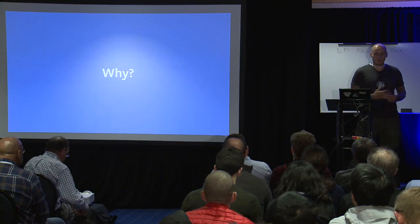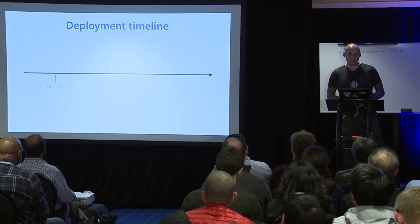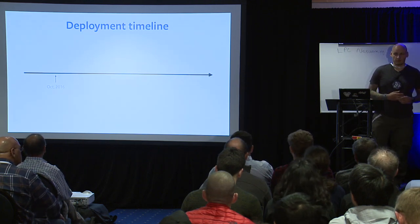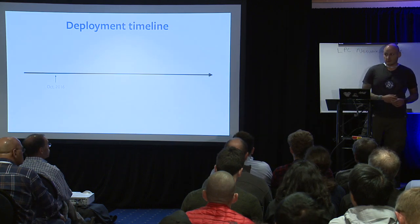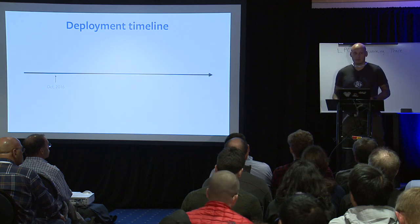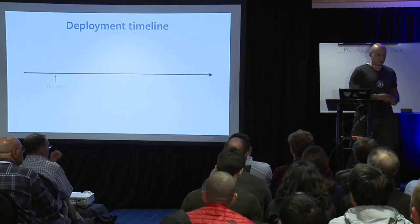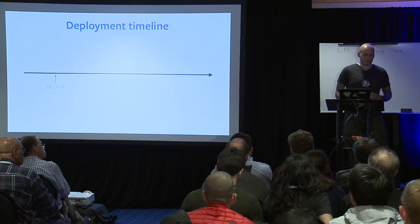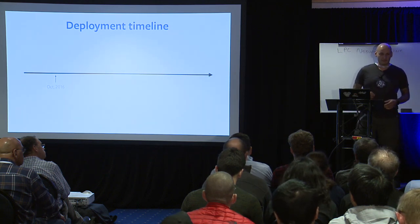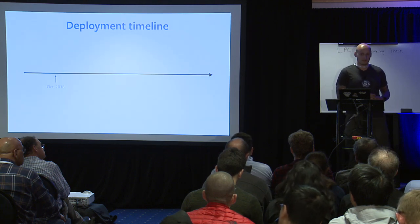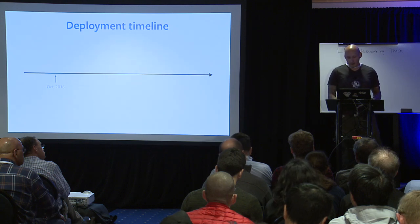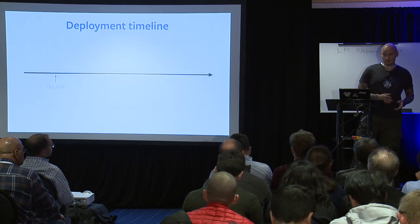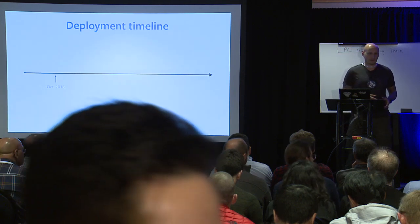Why did we decide to build something on top of XDP? Everything started in October 2016 — when one of the biggest botnets was revealed, the Mirai botnet. There was one of the biggest attacks around that time, 600 gigabits per second. If you're running a stateful service, you multiply that number by 1.5 and that's basically how many packets per second you'll get if it was a TCP SYN flood.